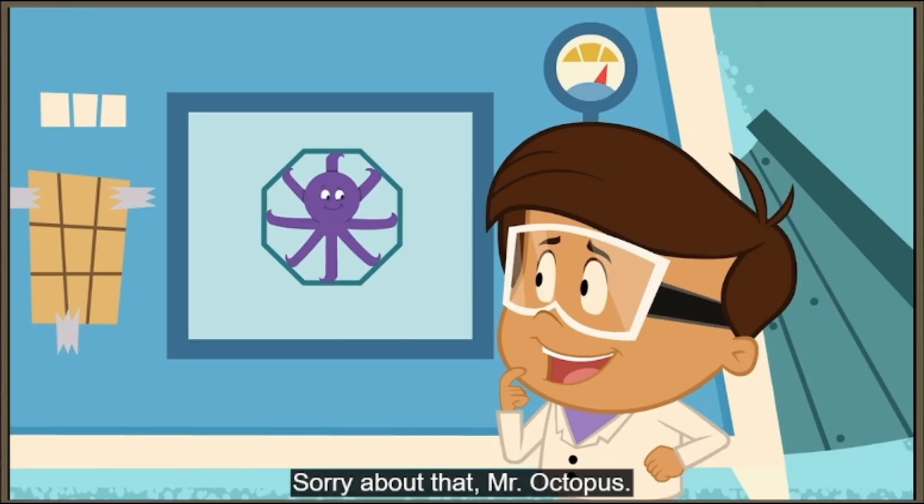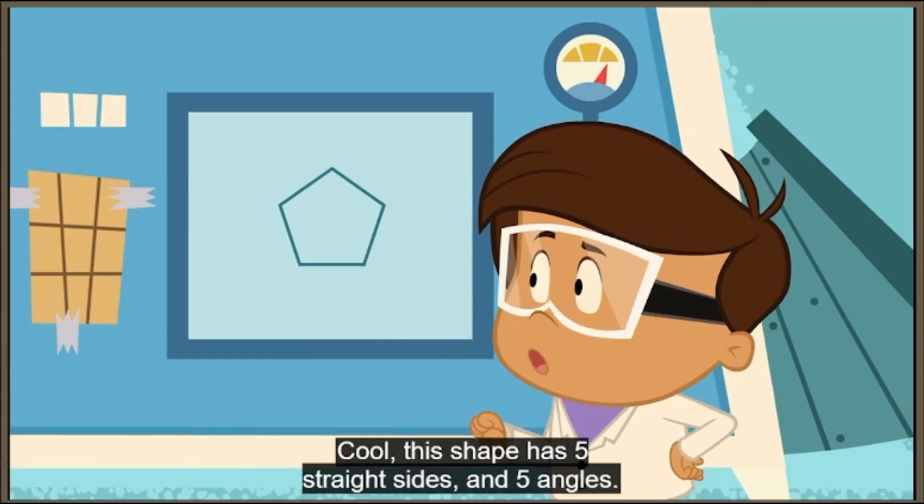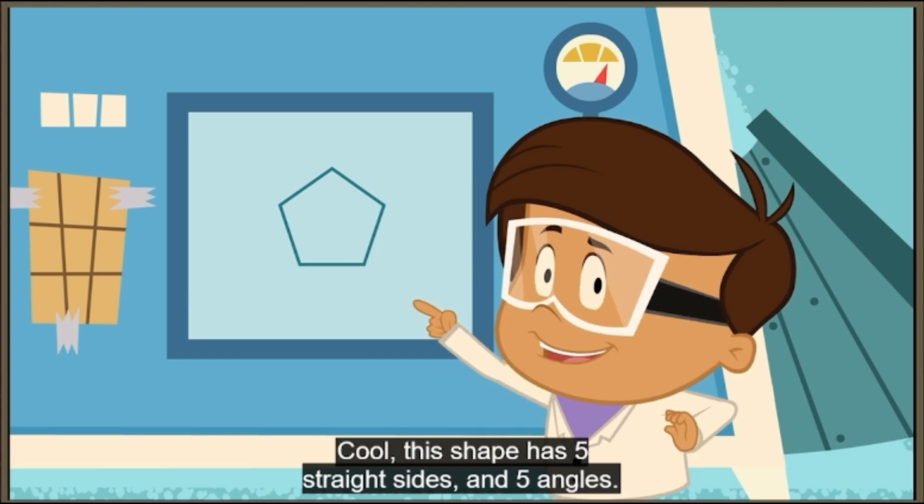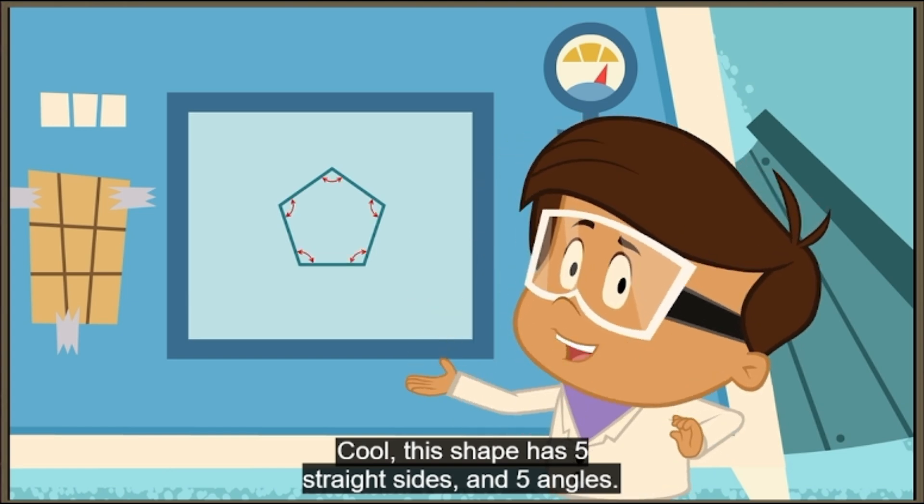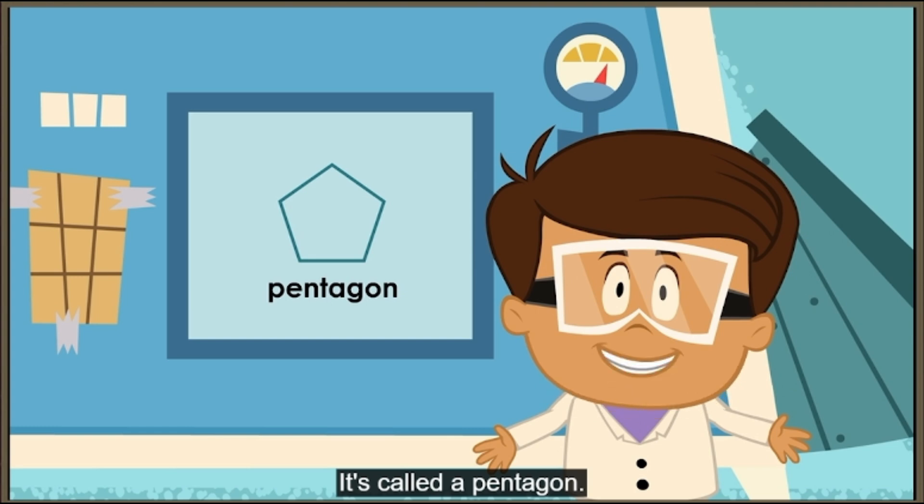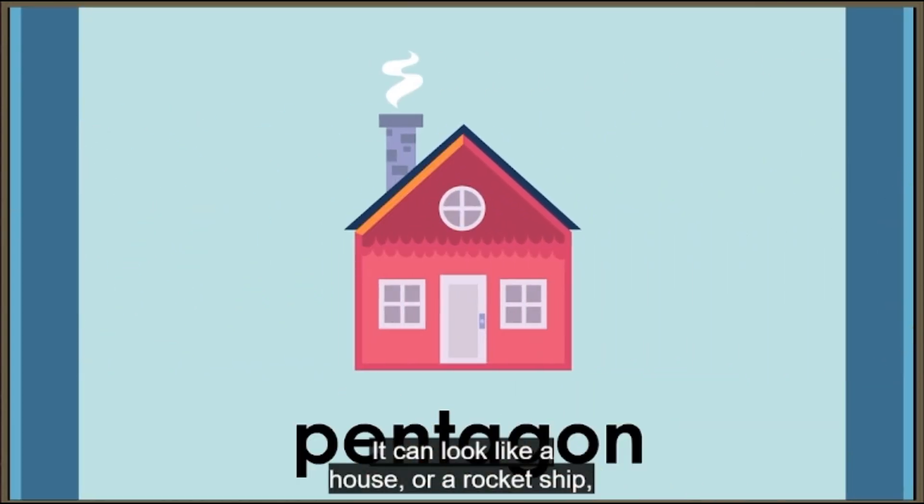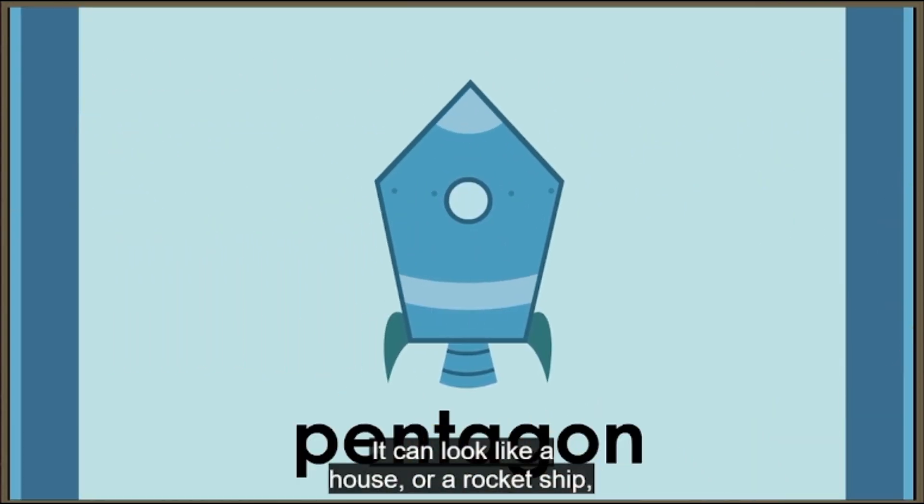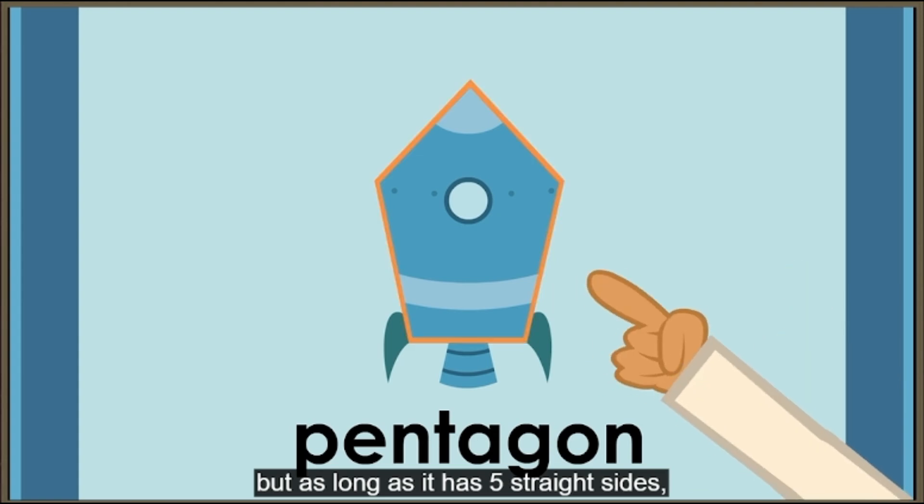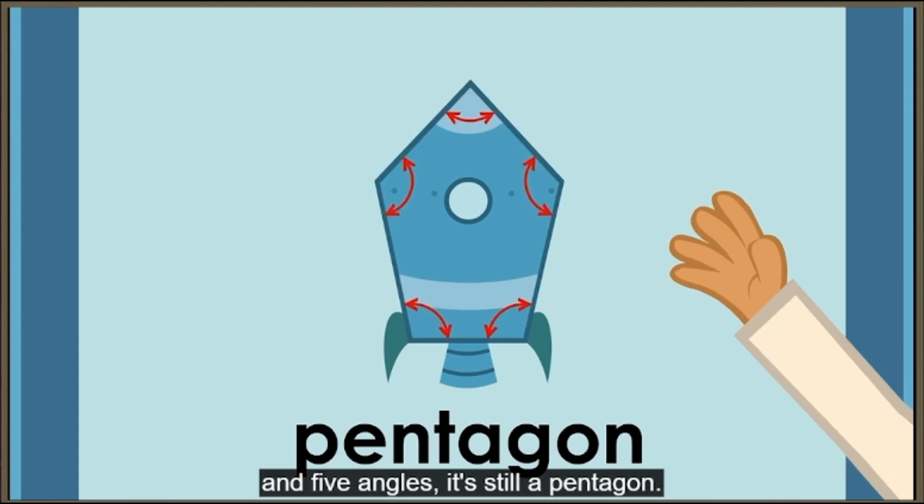Sorry about that, Mr. Octopus. Cool! This shape has five straight sides and five angles. It's called a pentagon. It can look like a house or a rocket ship, but as long as it has five straight sides and five angles, it's still a pentagon.